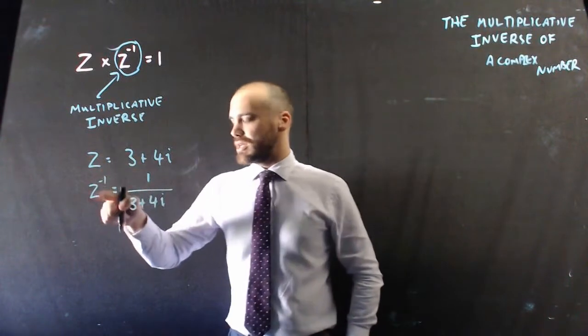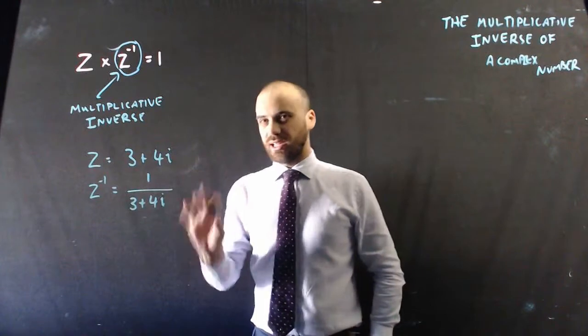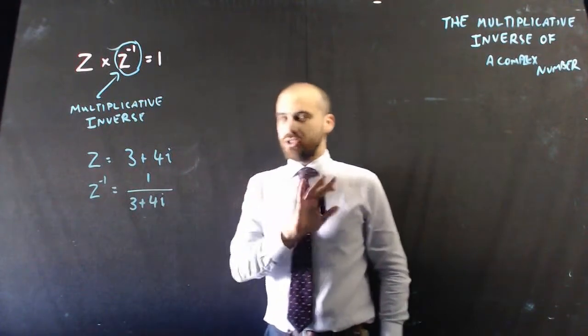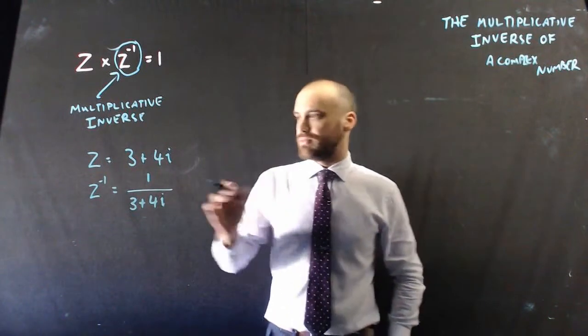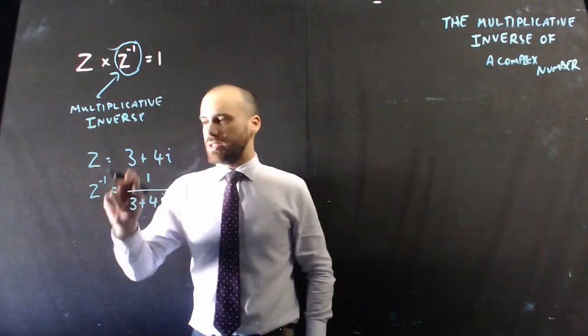Alright, so now I know what z is, and I know what z to the negative 1 is. But that's really ugly. Having a complex number on the bottom of a fraction is just not the way that we do business. So the question is, if z equals 3 plus 4i, find z to the negative 1.